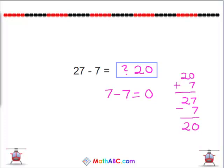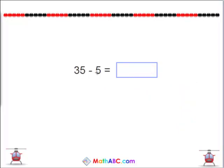Let's try another one. 35 minus 5 equals what? Again we know 5 minus 5 equals 0. So if you minus 5 from 35 you get 30. 35 minus 5 equals 30.